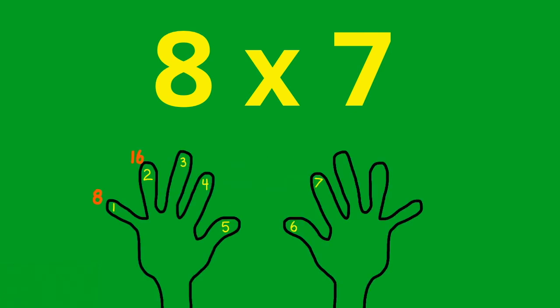8, 16, 24, 32, 40, 48, and 56. So 8 times 7 is 56.